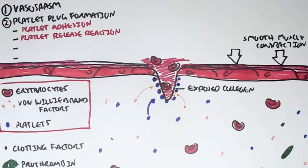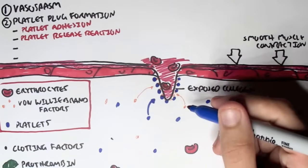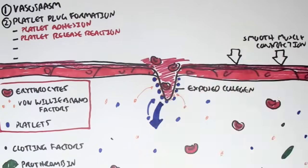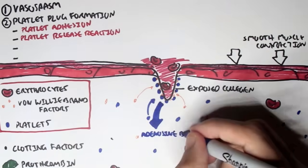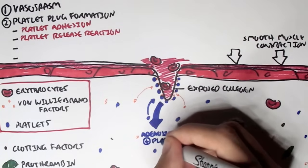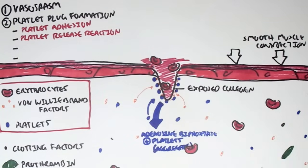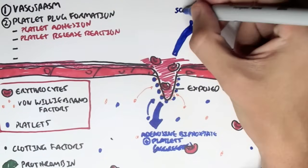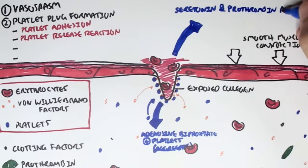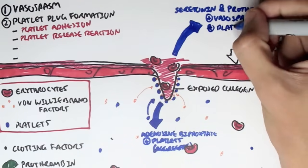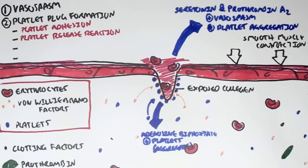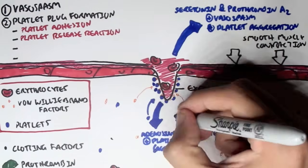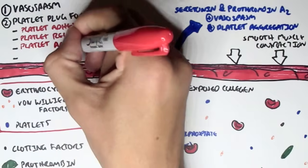The next step of platelet plug formation is platelet release reaction. And this is where the platelets begin releasing chemicals to attract more platelets to the area, to join the party, as well as increasing vasoconstriction. The chemicals released by the platelets are adenosine diphosphate, which tells more platelets to come, and also serotonin and thromboxane A2, not prothrombin A2, that's a mistake. And this increases vasospasm and also tells more platelets to come, known as platelet aggregation, which is our third step in platelet plug formation.